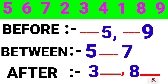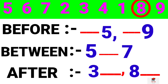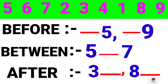Here I give you some numbers. So dear, please find the correct number. Before means aage. So friends, tell me the numbers before 5. The answer is 4. Very good. Between means majkhane. So friends, tell me the numbers between 5 and 7. Very good. 6. Next, after means baad. So friends, tell me the numbers after 3. Very good. 4. Next, after 8. 9. Very good.